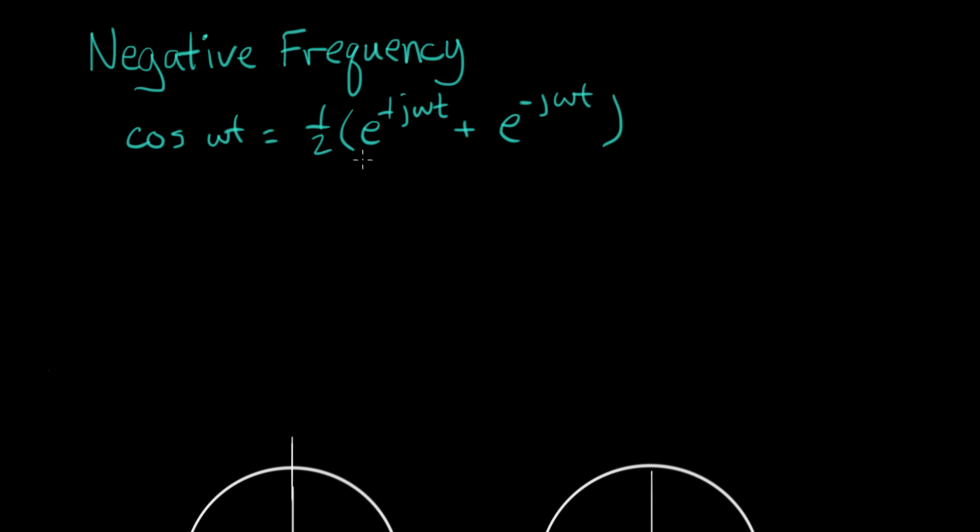Each of these complex exponentials we can draw as a rotating complex number. For this first one, we could draw a complex number out here in space and think of it as a rotating vector. That would be e to the jωt, this one has a plus sign.